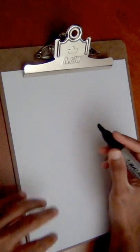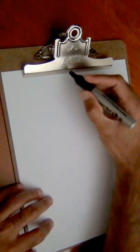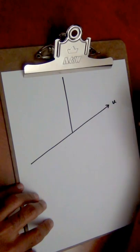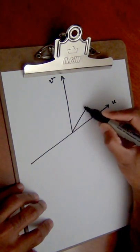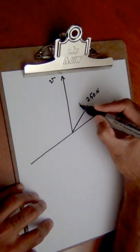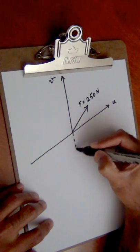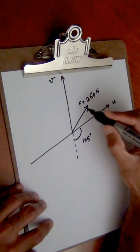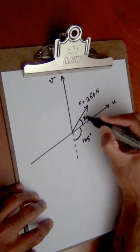So we will first set up the problem here. We have two directions, once again as in the previous problem we solved on force components. I have the V direction and then I have the U direction. And I have a force vector given here with a magnitude of 250 newtons — let's call this force F. Some angle information is also given: we have a vertical line extending here, and this angle is given to us as 105 degrees, and then we have this angle inside here between F and the U direction given as 30 degrees.